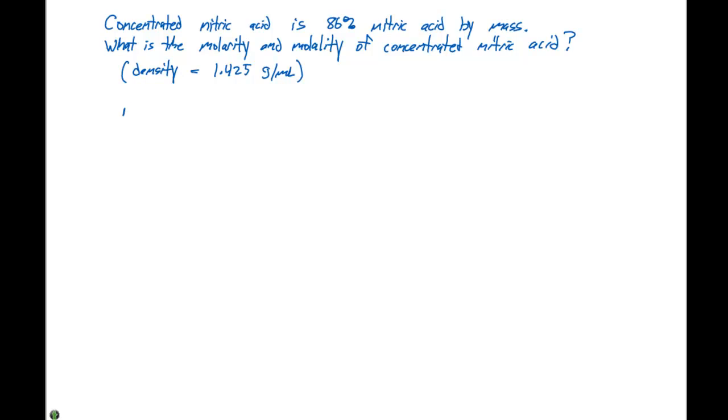If we look at mass percent, which is what we're given, our mass percent is 86% nitric acid by mass. That means we have 86 grams of nitric acid, which is HNO3, per 100 grams of solution.